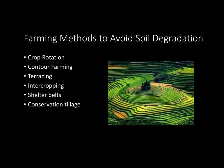Intercropping helps retain soil quality by planting different crops very close to each other, which keeps the soil healthy. Shelterbelts help prevent wind erosion — that's when you plant bushes or trees along the outsides of your crops, preventing wind from sweeping away the topsoil. Conservation tillage is a general term, but basically it maintains soil quality by not ripping the soil apart each season.